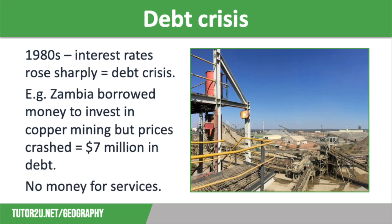However, there are times when borrowing large sums of money can damage LICs. In the 1980s, interest rates rose sharply so the debts of many LICs spiralled out of control, resulting in a debt crisis. For example, Zambia borrowed money to develop its copper industry, but then prices for copper crashed and interest rates shot up, leaving Zambia with a debt of nearly $7 million at the end of the 1980s.